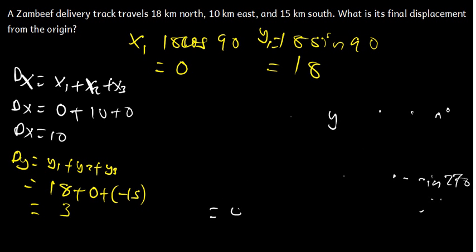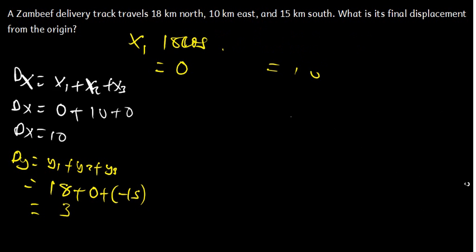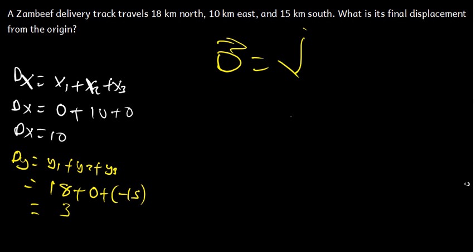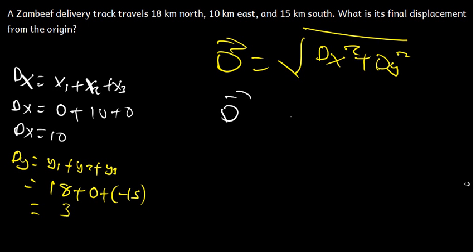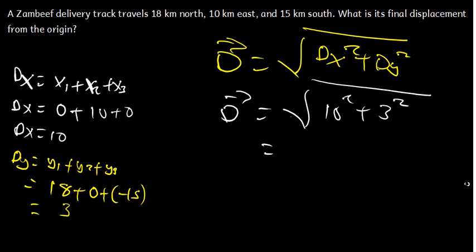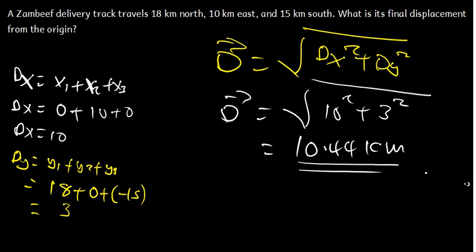To find the final displacement magnitude, use d = √(dx² + dy²). Plugging in: d = √(10² + 3²) = √(100 + 9) = √109 ≈ 10.44 kilometers. That is the final displacement magnitude.